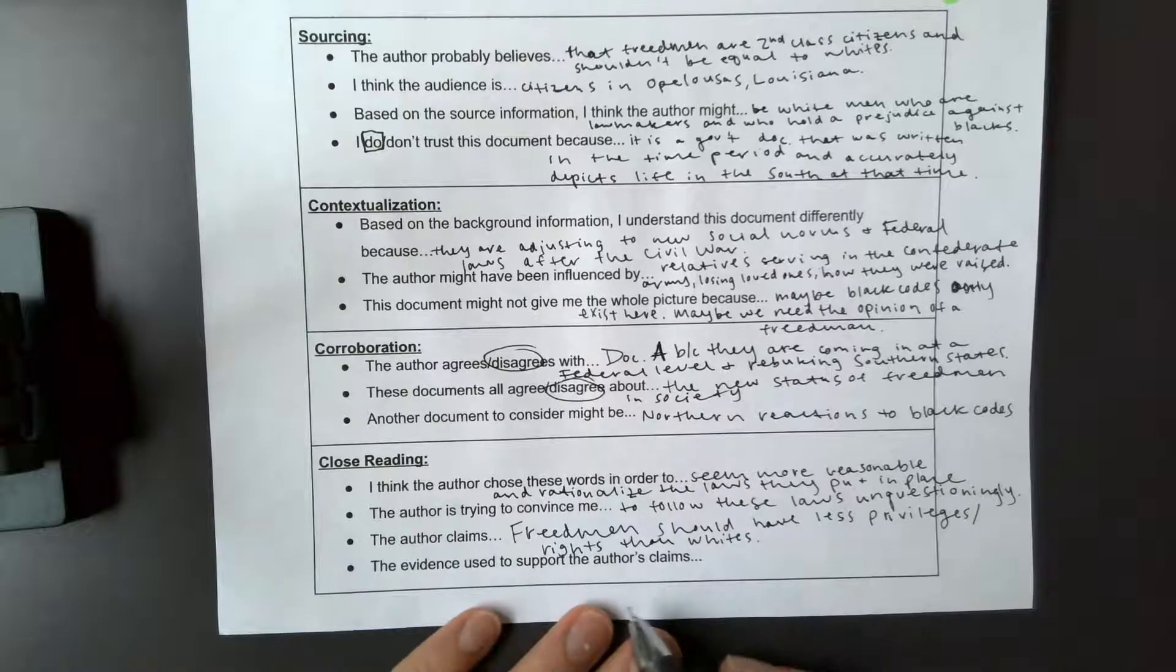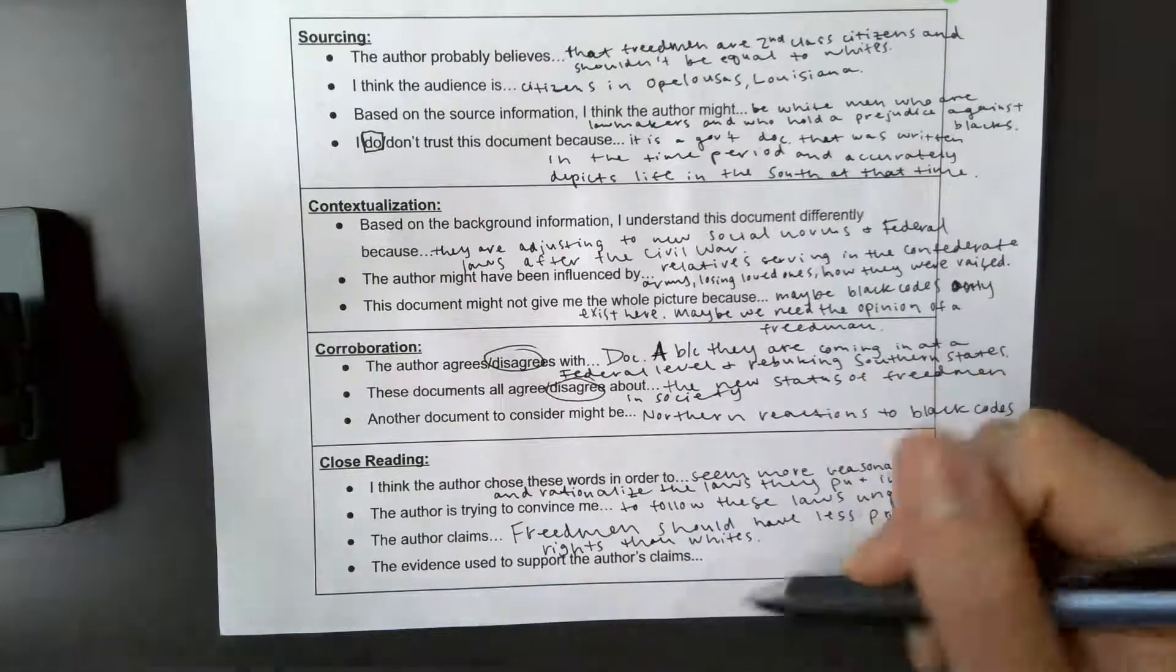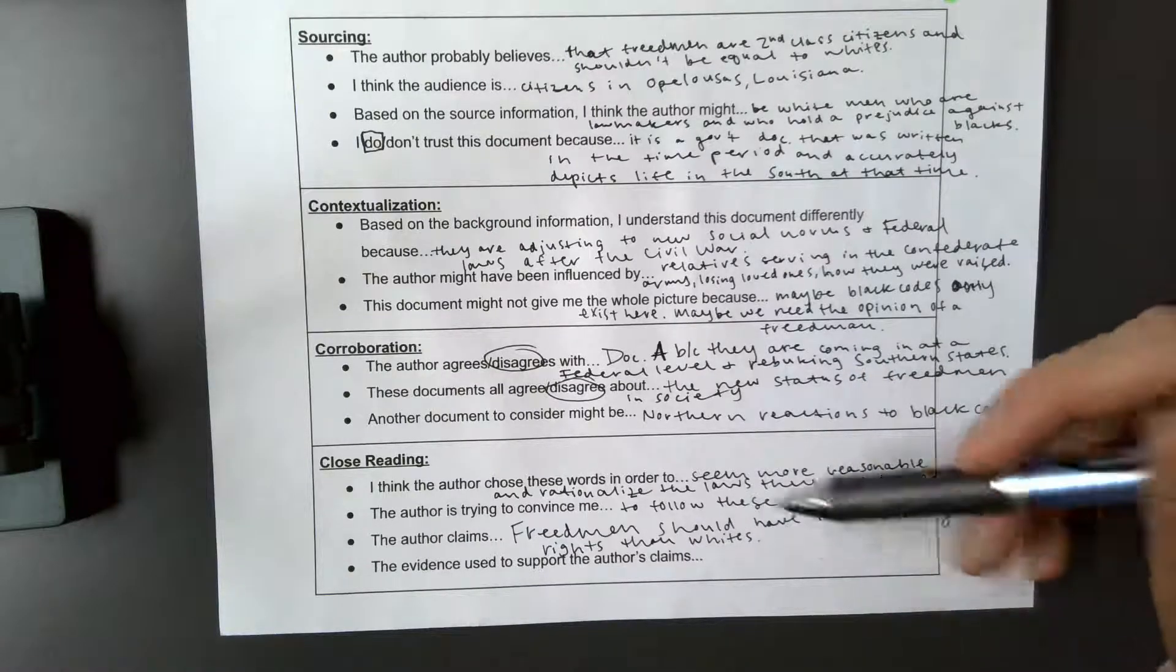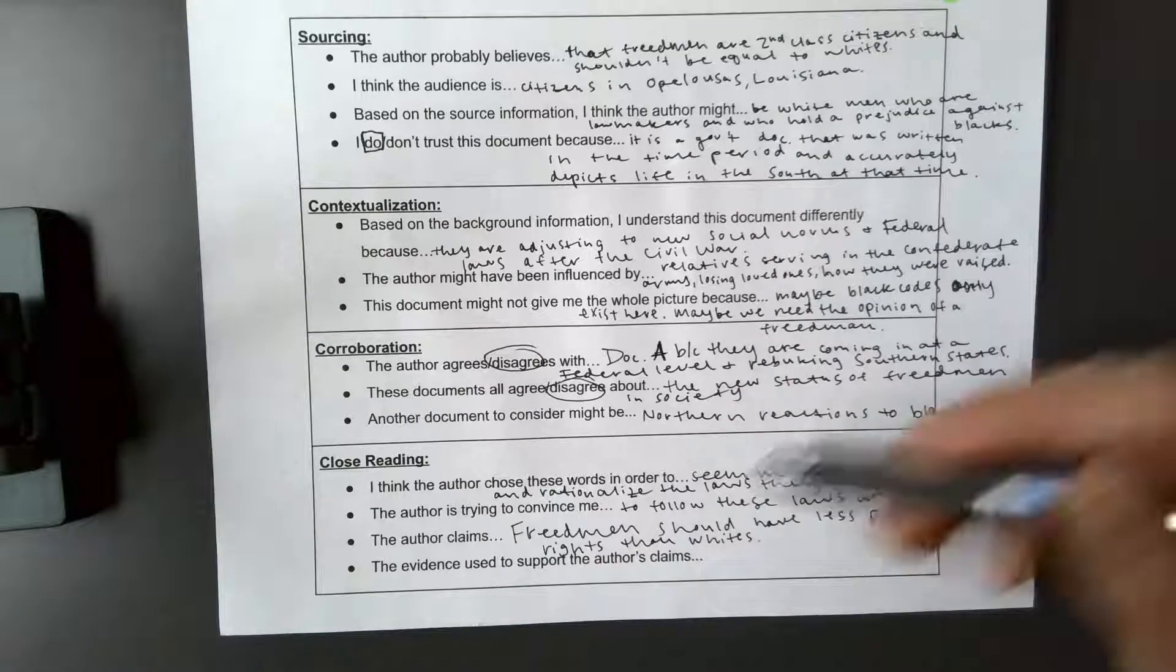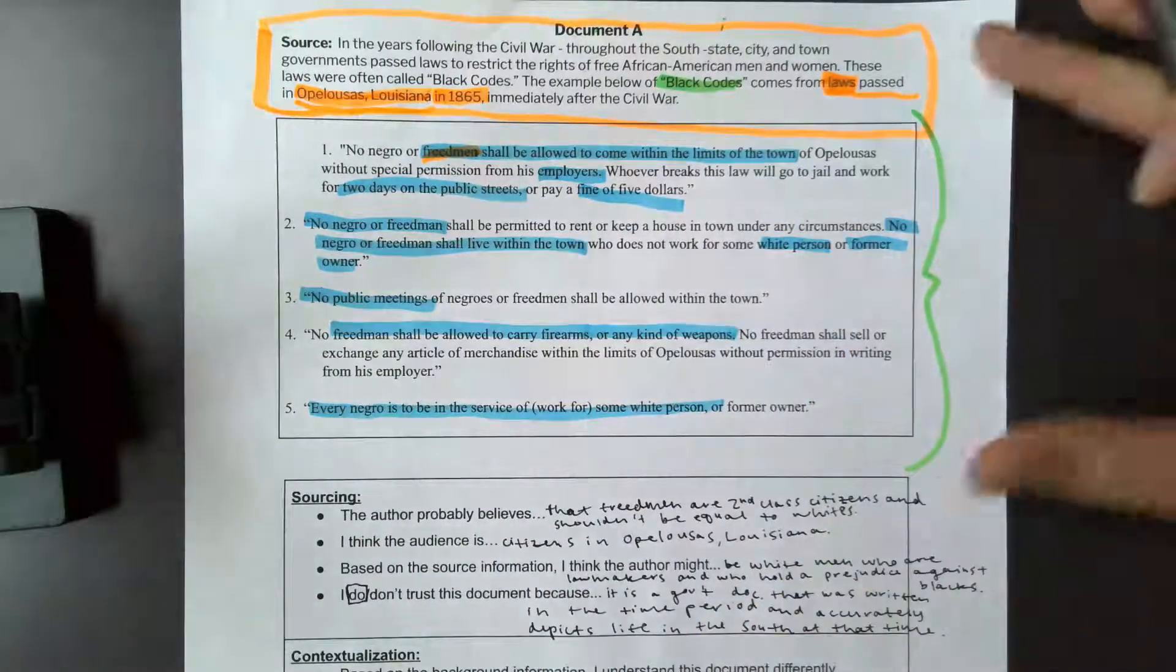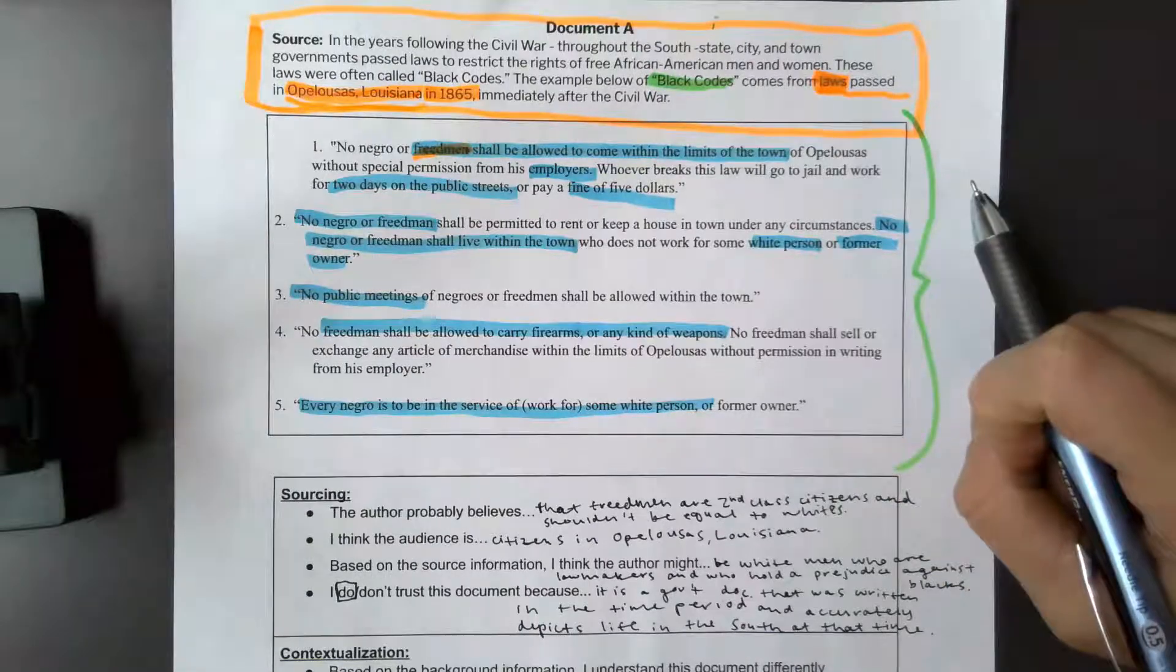And then evidence used to support the author's claims. And like I said, if this was a news article or something like that, that's where you'd find evidence from where they're pulling their information from. But since this is the primary source, they're not pulling this information from anywhere else, so there's not really any evidence that we can pull right here.